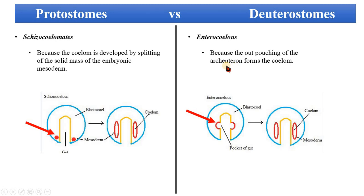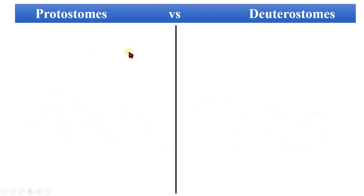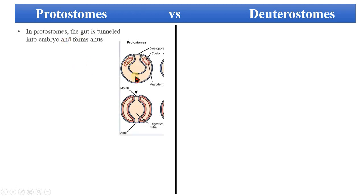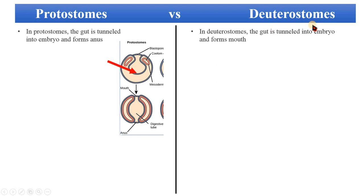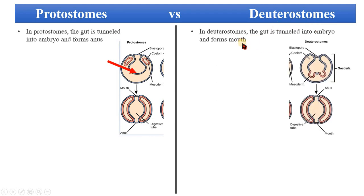The archenteron is the primitive gut — the early embryonic gut — which further develops into the endoderm and mesoderm. In protostomes, the anus is formed by the tunneling of the gut; the mouth was formed first from the blastopore. In deuterostomes, the same tunneling of the gut forms the mouth, because the anus was already formed by the blastopore.